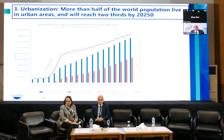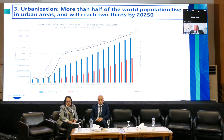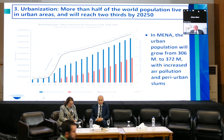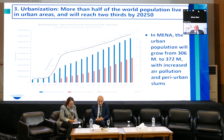The third mega trend is urbanization. More than half of the world population live in urban areas and will reach two-thirds by 2050. In MENA, the urban population will grow from 306 million to 372 million, with increased air pollution and peri-urban slums — again having implications on health services.